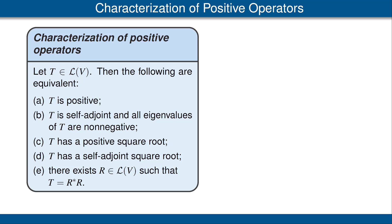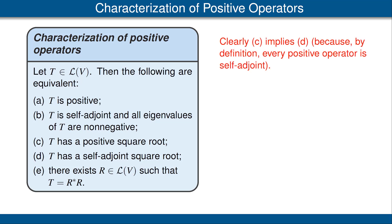The implication C implies D is trivial: if T has a positive square root, then since every positive operator is self-adjoint, T has a self-adjoint square root. This completes the proof that C implies D.